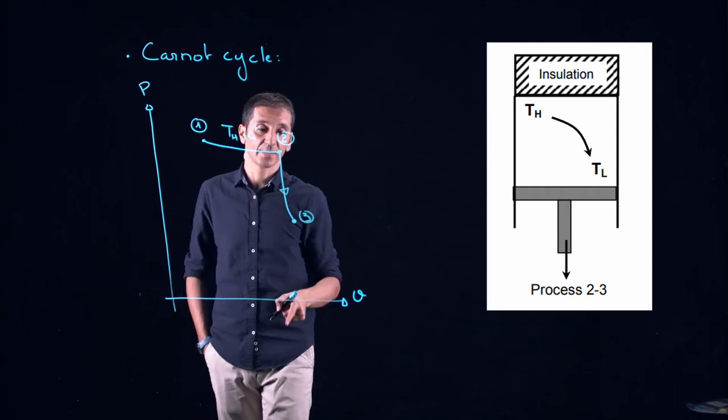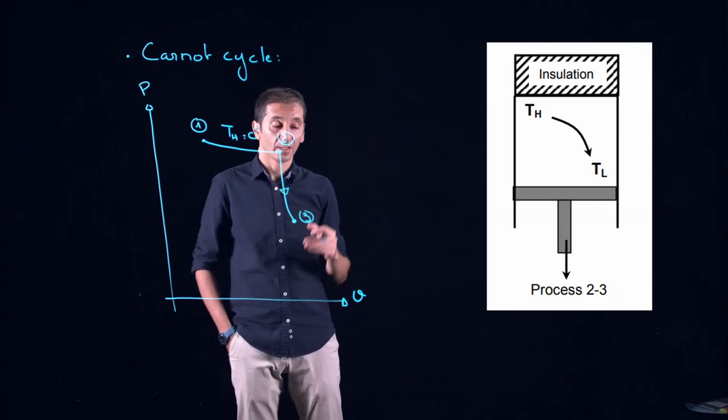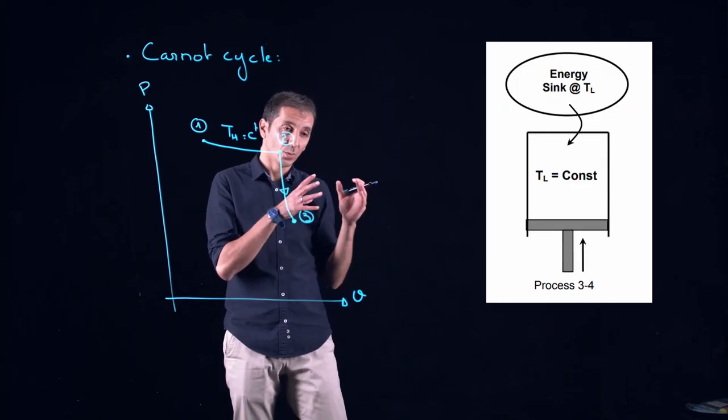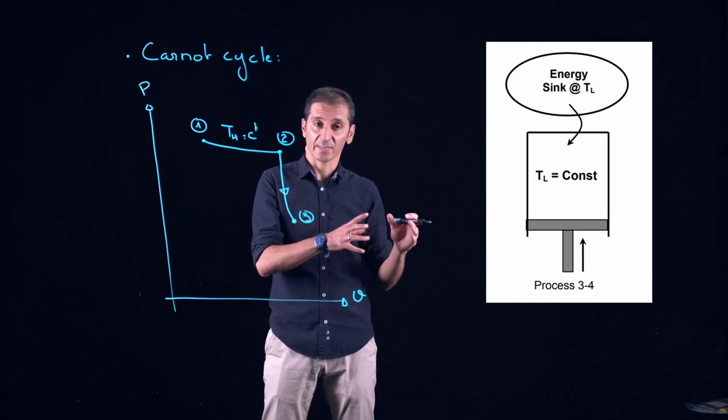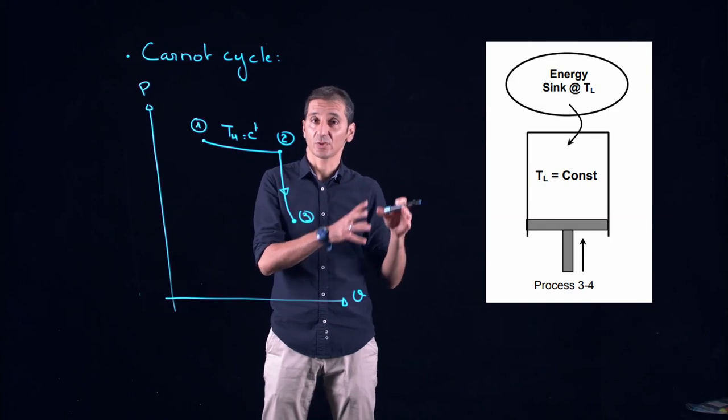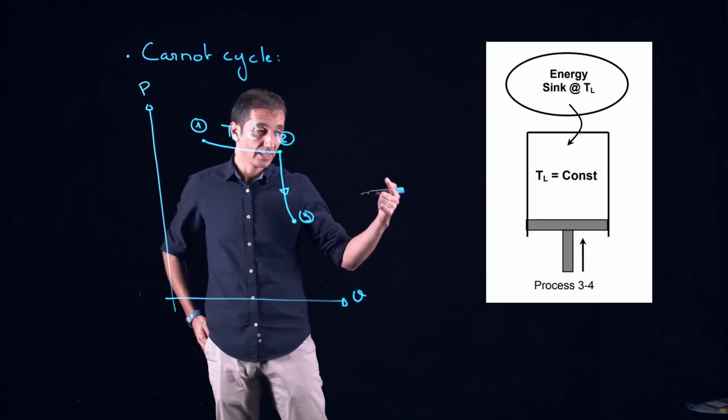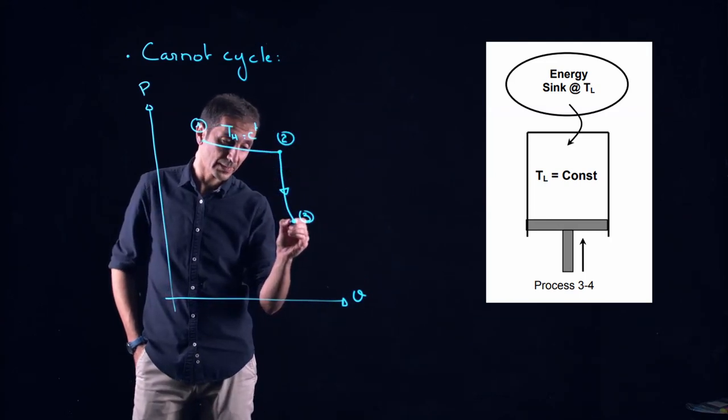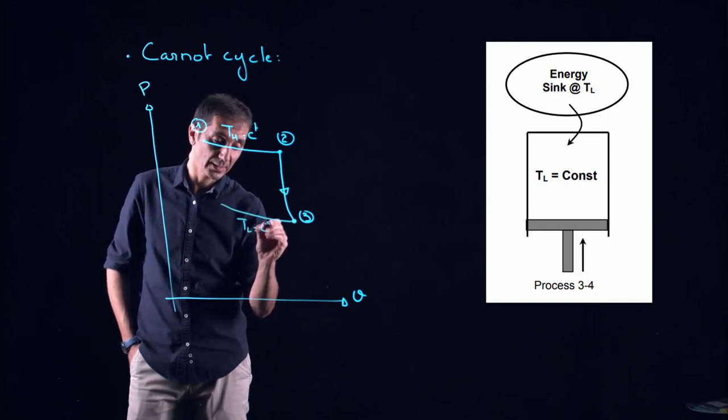After this, our gas is at a lower temperature TL. What we'll be doing we will put it in contact with a reservoir, a heat sink at a temperature TL which is the same temperature as the gas, so it's again an isothermal now heat rejection. Here actually the piston will move up and here the temperature is TL and will remain constant.